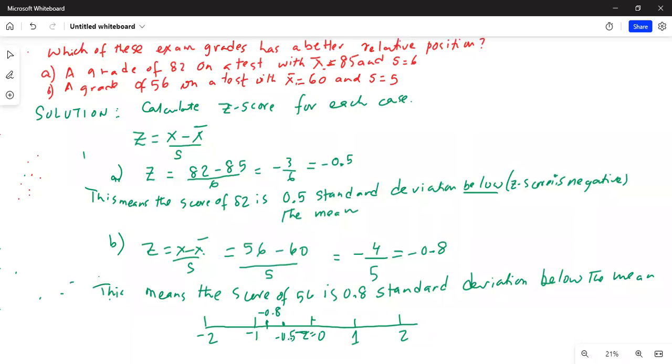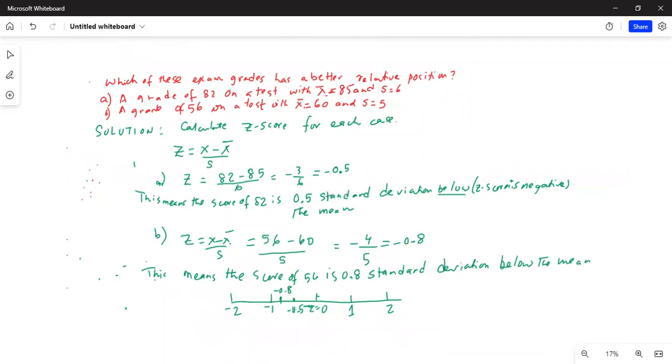Remember, on the left of 0, the farther you are away from 0, the less the quantity is. So what do I mean by that? That means -0.8 is less than -0.5.